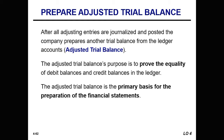One of the things you may have noticed is that in accounting we do a lot of things multiple times, and that's because we want to be sure that everything is there and everything is correct. So after you have prepared all the adjusting journal entries and they have been journalized and posted to the appropriate ledgers, we create another trial balance from those ledger accounts.